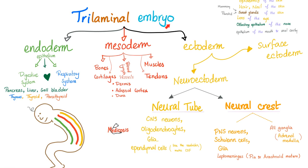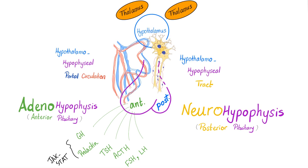The trilaminar embryo is a wonderful example of cell migration and differentiation. Consider the neural crest cells — they migrate all over your body, giving you the peripheral nervous system: neurons, Schwann cells, glial cells, even the leptomeninges, all the ganglia, and even the adrenal medulla because it's a modified ganglion. Another example is the anterior pituitary adenohypophysis and the posterior pituitary neurohypophysis.